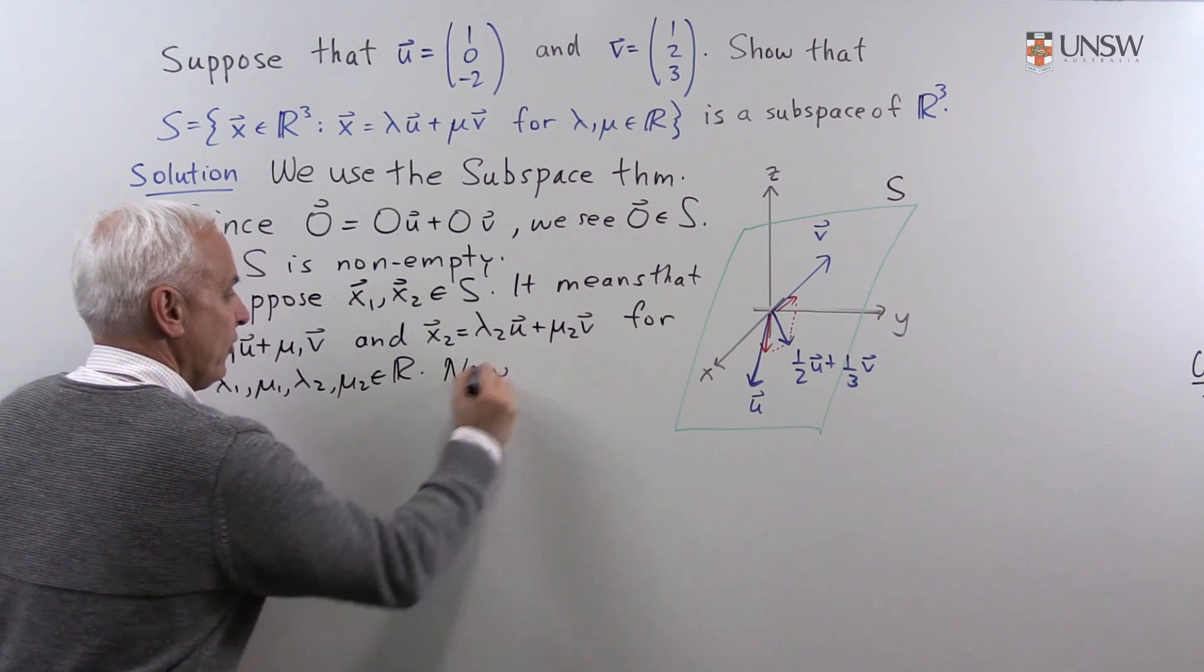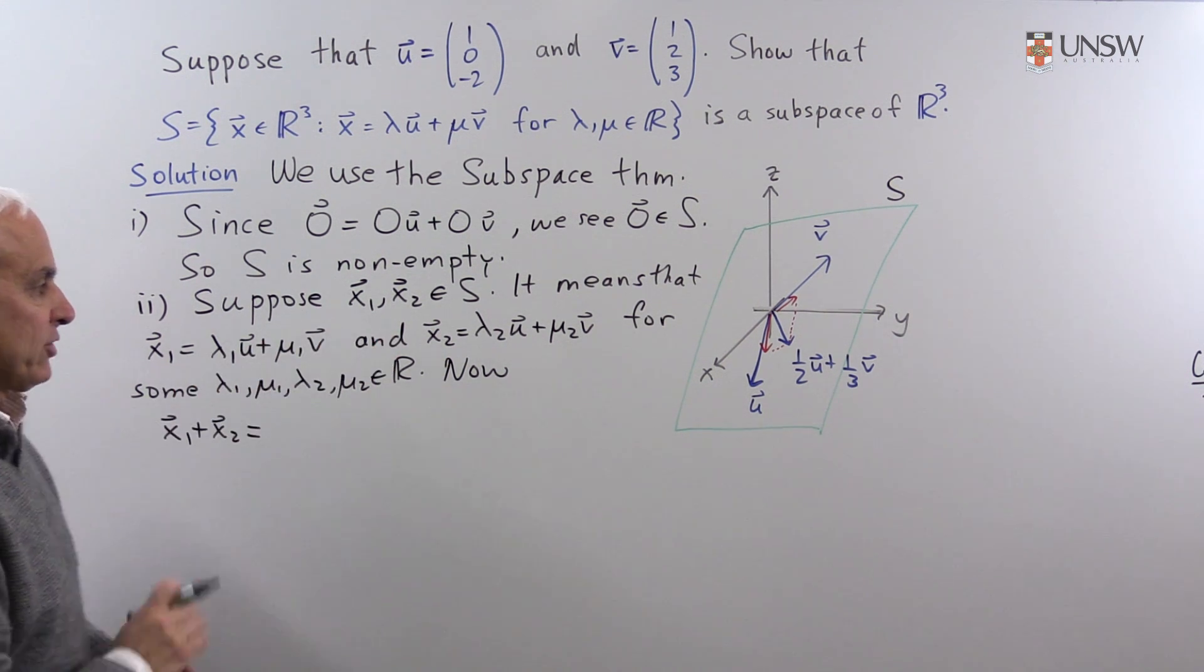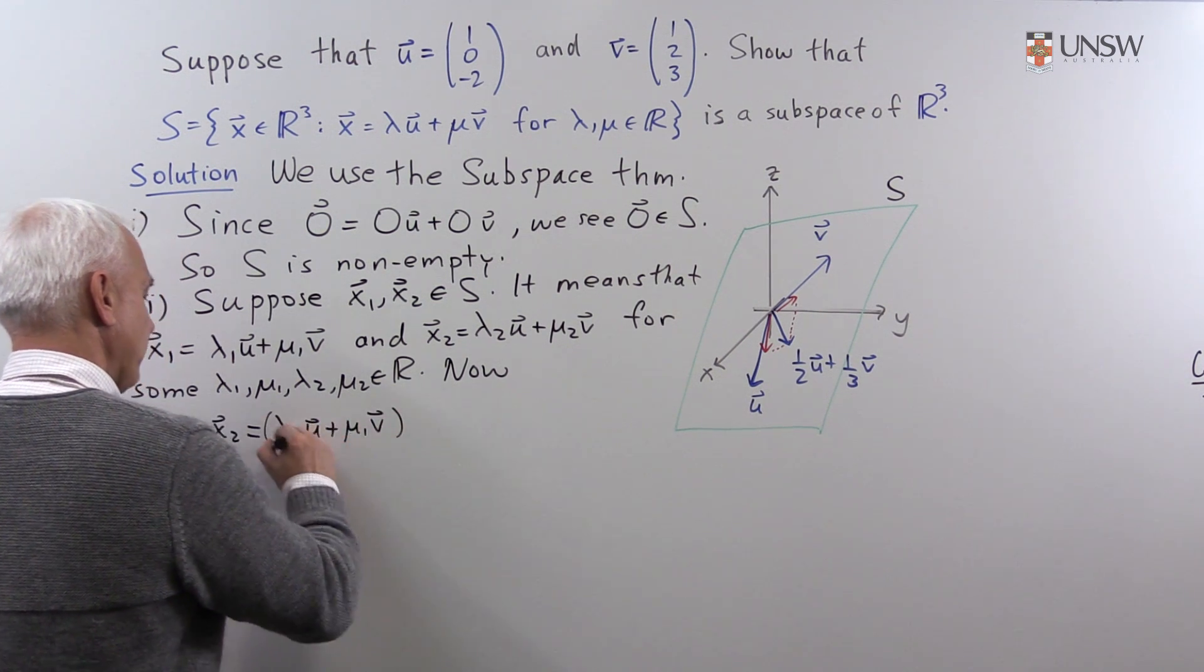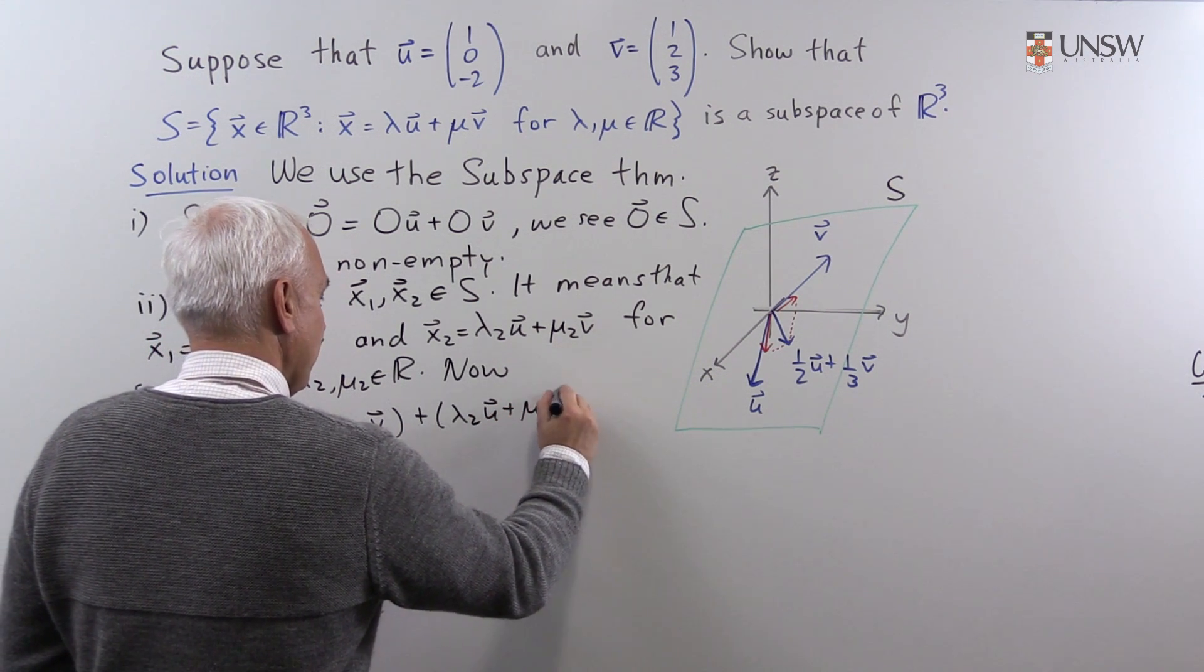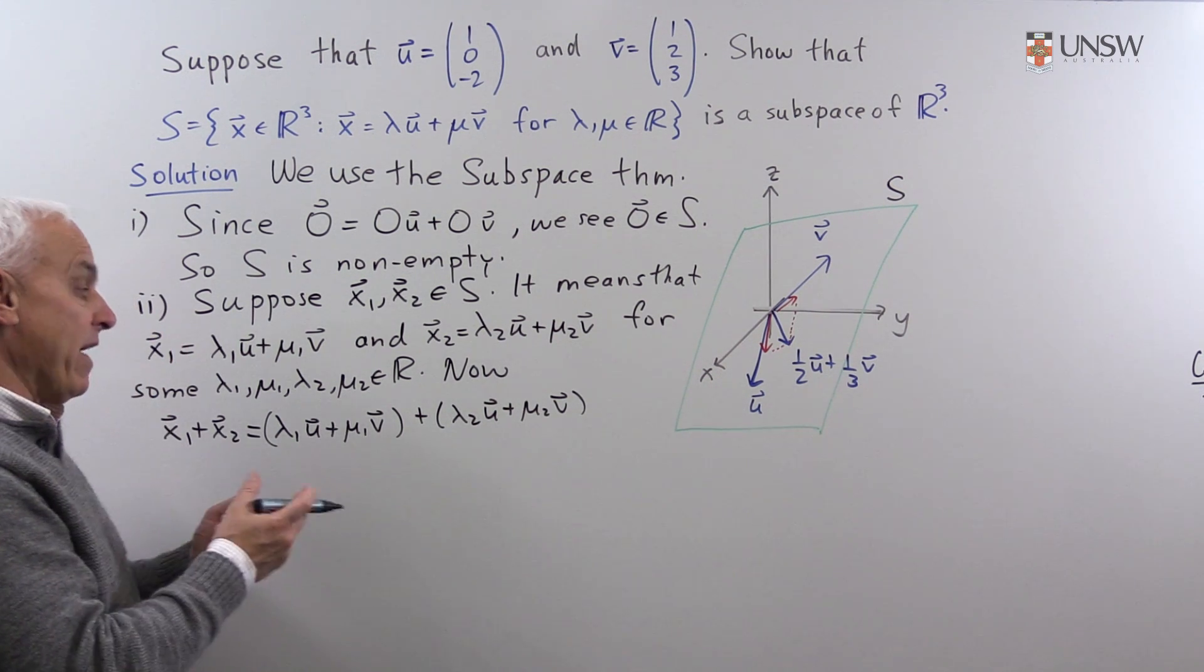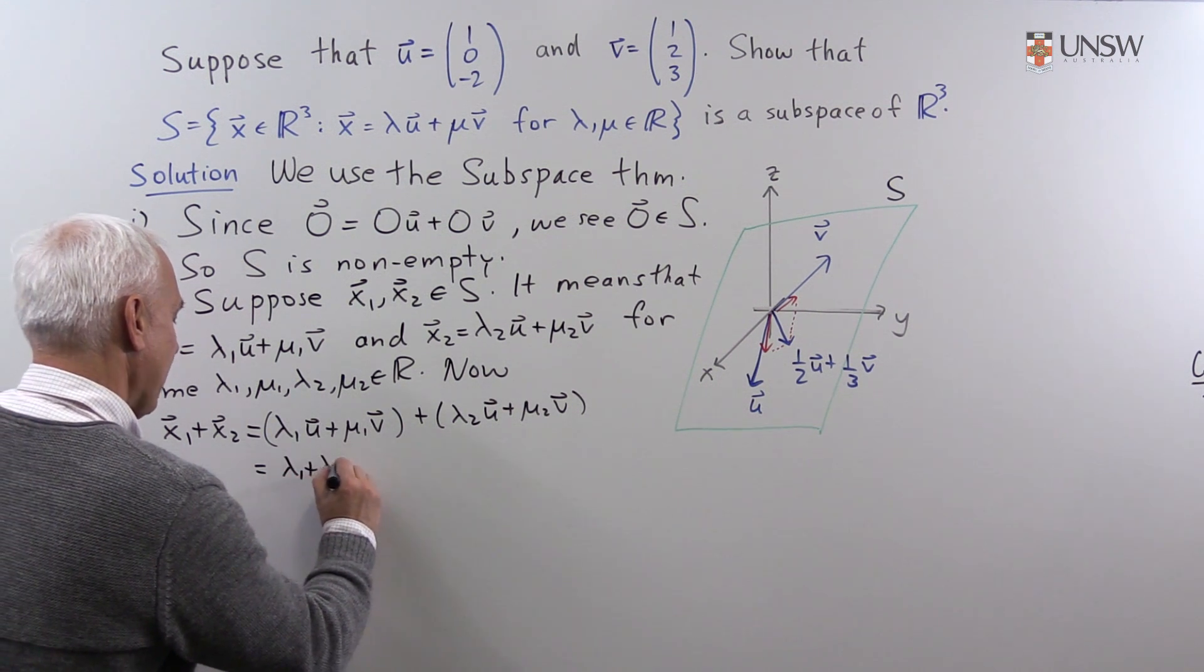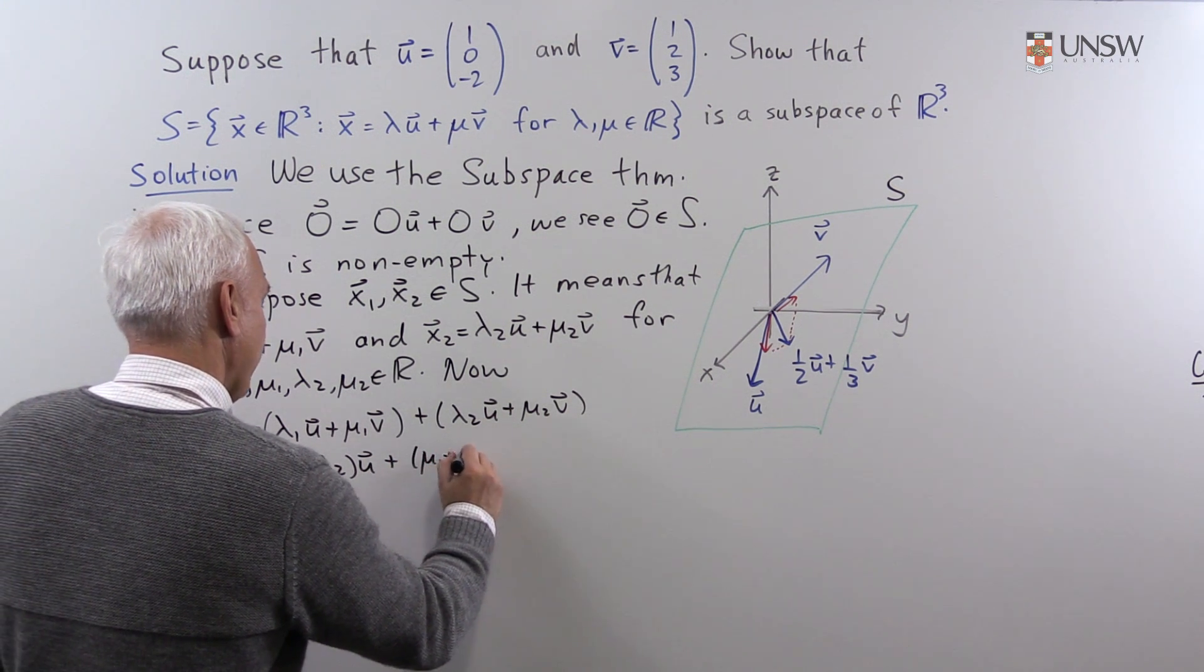All right, so now what we're going to do is add those two vectors. So now x₁ plus x₂. Well, if we add these two vectors, then we have λ₁u plus μ₁v, that's the first vector, and then the second vector is λ₂u plus μ₂v. And then we use the rules of manipulation of vectors in a vector space to be able to rewrite this. So we'll bring the multiples of u together and write it as (λ₁ + λ₂)u plus (μ₁ + μ₂)v.